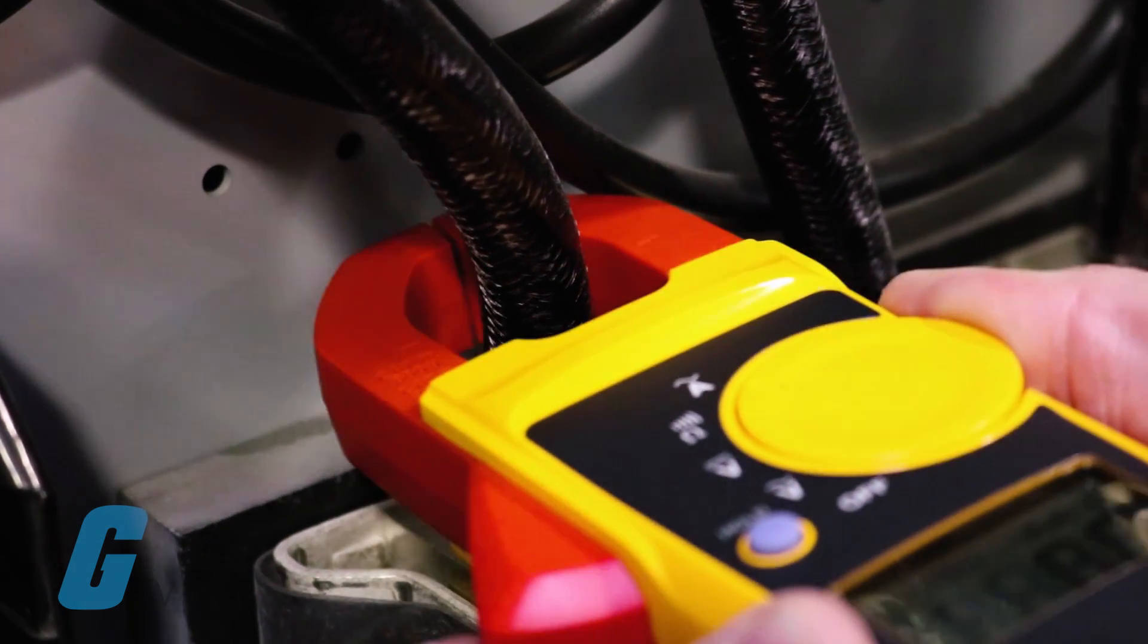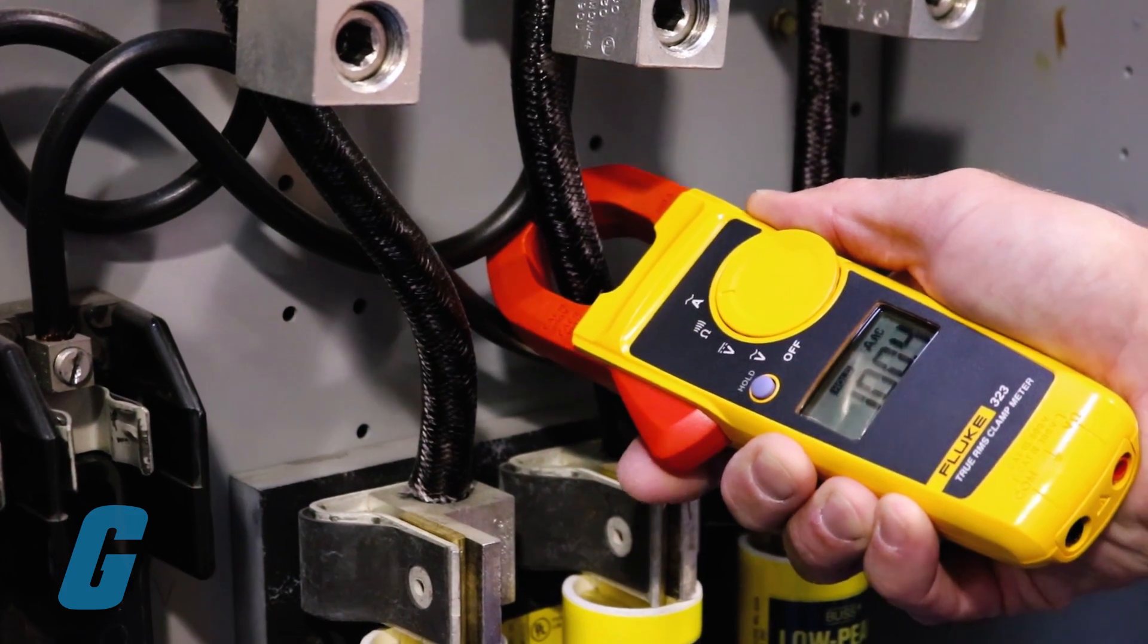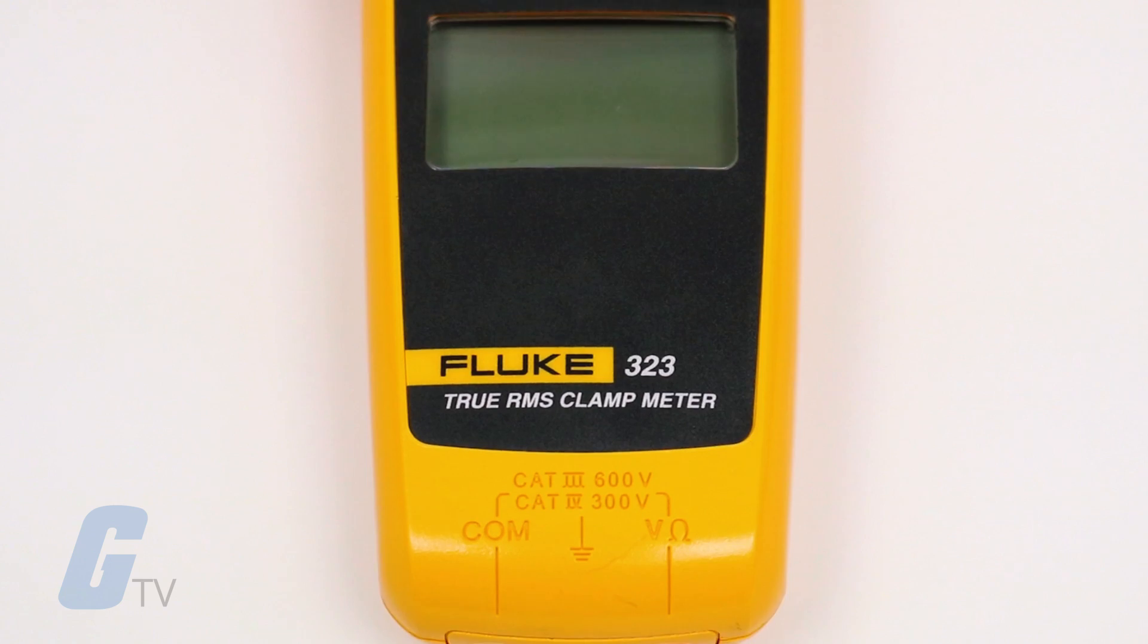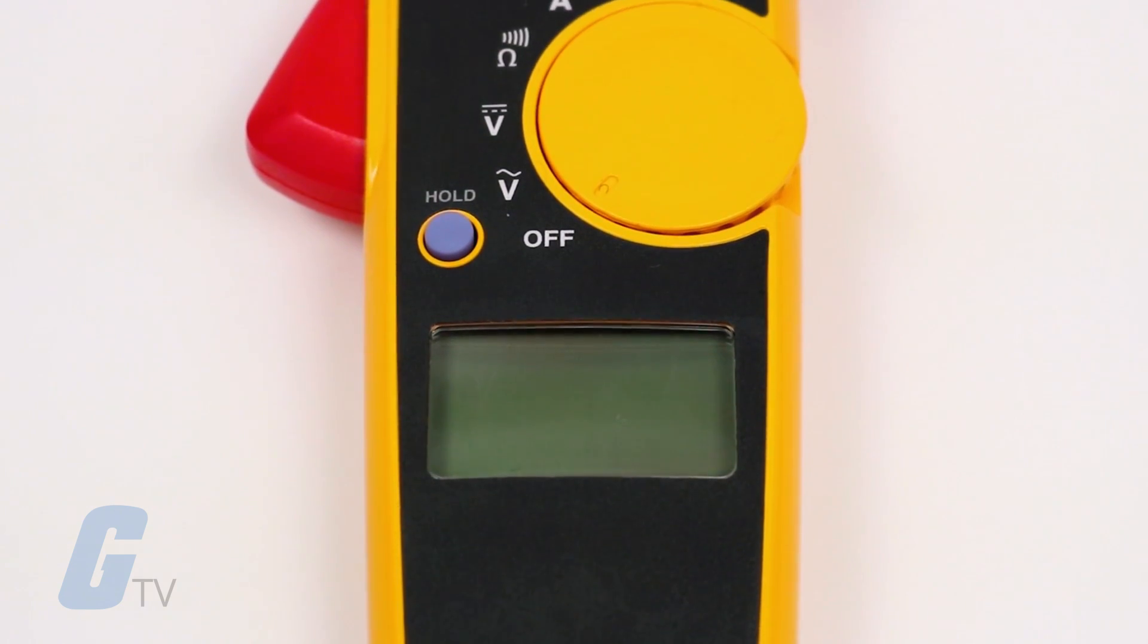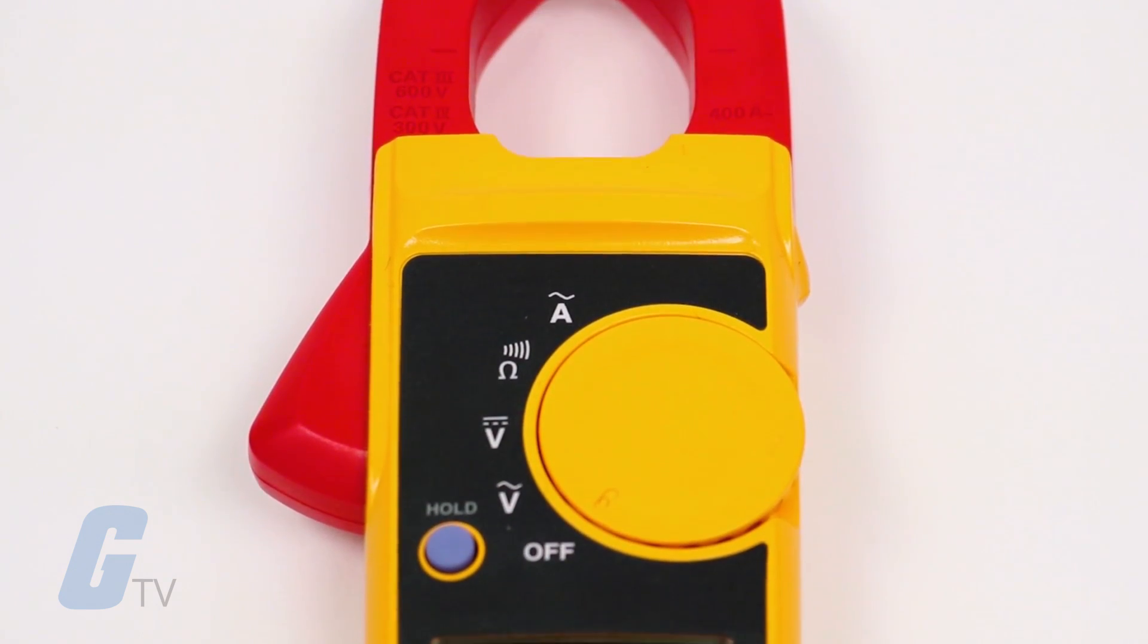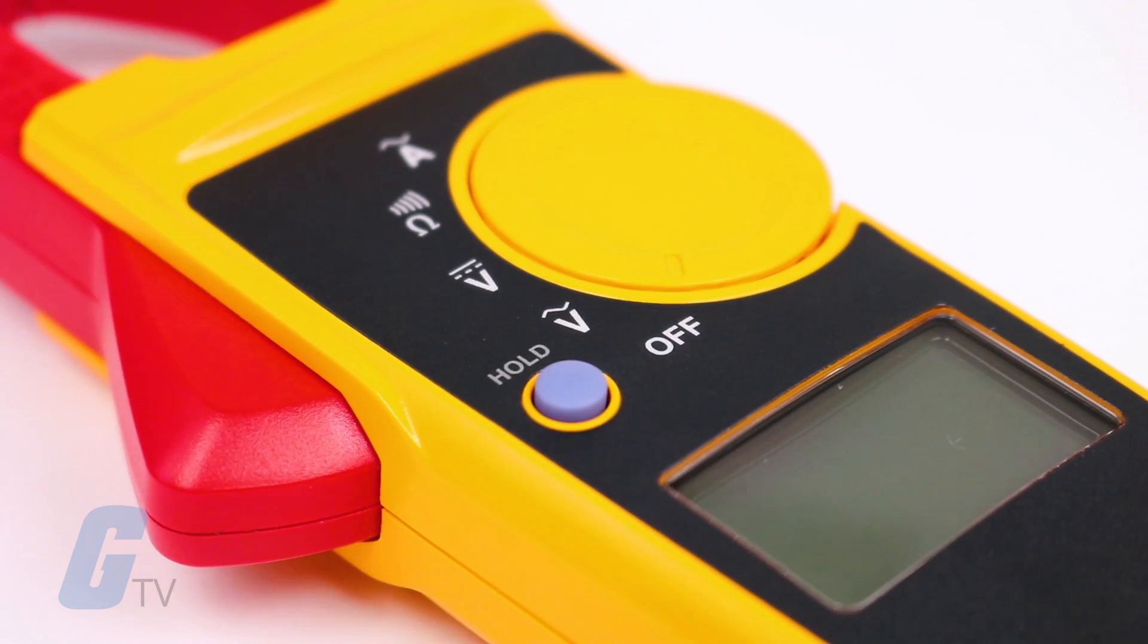The Fluke 323 Series True RMS Clamp Meter is designed to perform in the toughest environments and provide noise-free, reliable results that users can trust to confidently diagnose problems. True RMS measurements and optimized ergonomics make this series one of the best general troubleshooting tools for commercial and residential electricians alike.